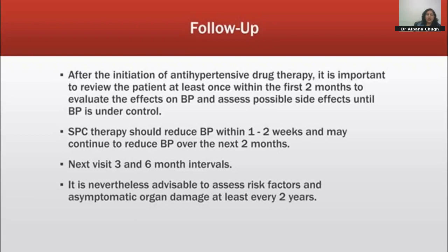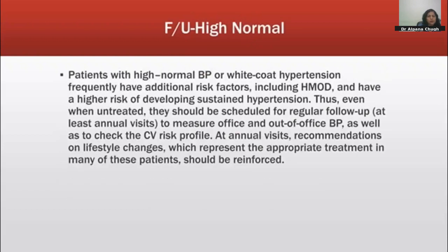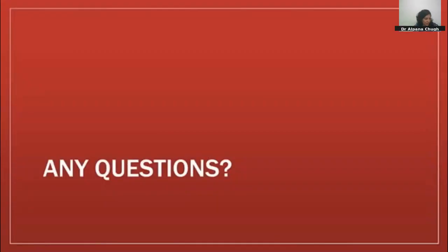For follow-up: once antihypertensive treatment is started, review the patient at least once within the next two months to evaluate BP control and check for side effects. With single pill therapy, BP should begin to reduce within one to two weeks and continue reducing over the next two months. Subsequent visits can be planned at three to six month intervals. Reassess risk factors and evaluate for organ damage every two years. In patients with high normal BP (130-139/80-84), follow up at least annually.